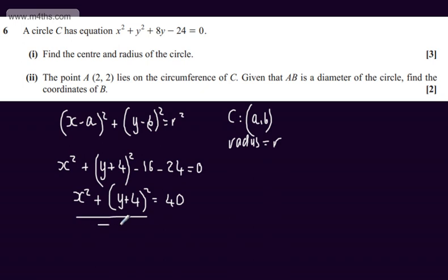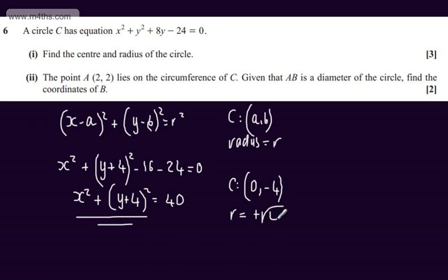We can see from this that the centre will be at 0, minus 4. The radius will be the positive root of 40, and writing this as a simplified surd, the root of 40 gives us 2 root 10. So the radius is 2 root 10 and the centre is at 0 comma minus 4.